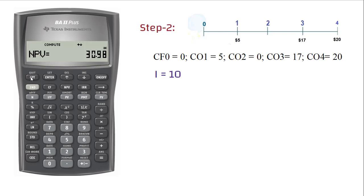So, you get present value of future cash flows as 30.98. Save this number by pressing STO and 2. Now, calculate future value of this number.